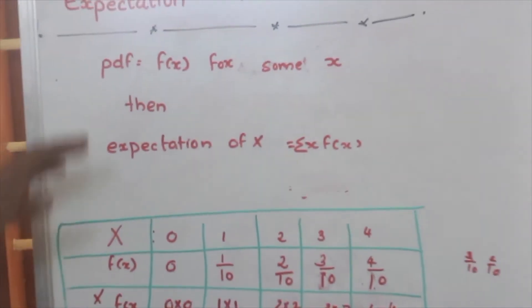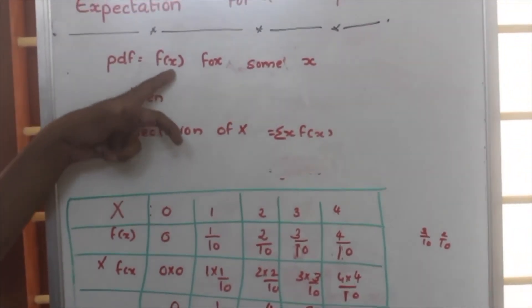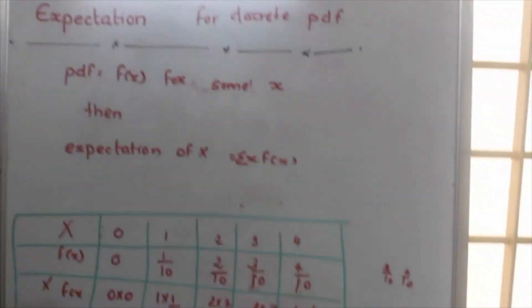PDF already we know - pdf is probability distribution function, that is some function for which when we supply x, we will get the probability.